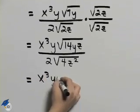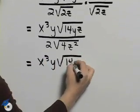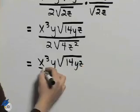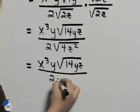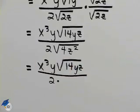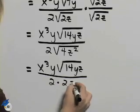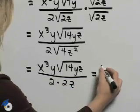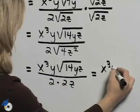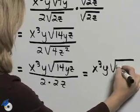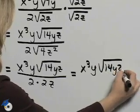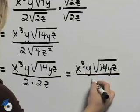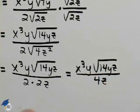Simplifying the denominator another step will give us 2 times the square root of 4z squared is 2z. And so we end up with x cubed y times the square root of 14yz all over 4z.